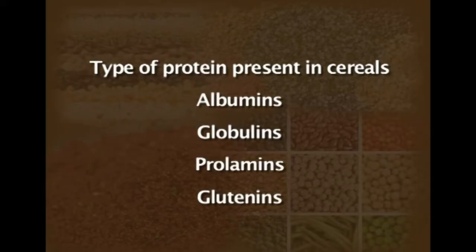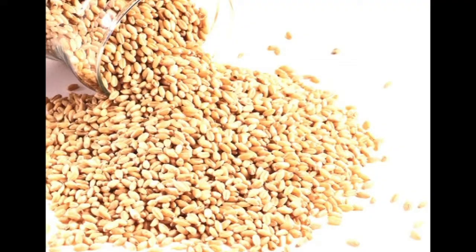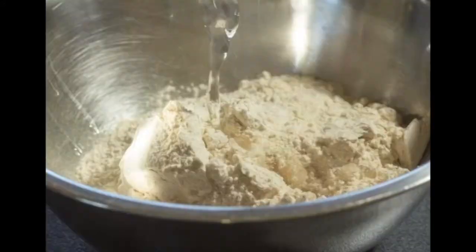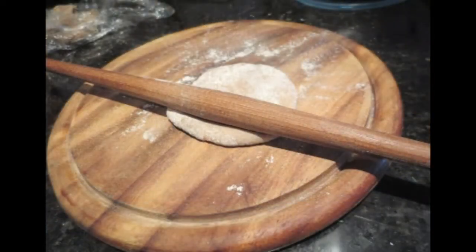The types of proteins found in cereals include albumins, globulins, prolamines and glutelins, and glutelins and prolamines are called gluten proteins. In wheat, prolamines and glutelins are found in the majority and are called gluten proteins because these two proteins, when kneaded in the presence of water, contribute very good elasticity to the dough.